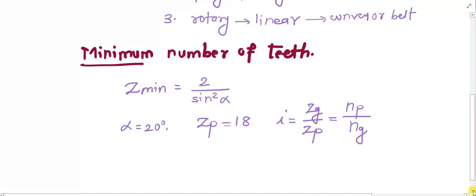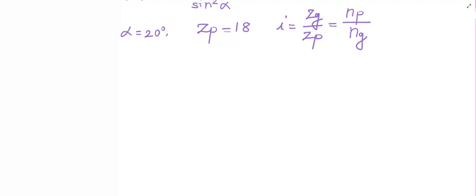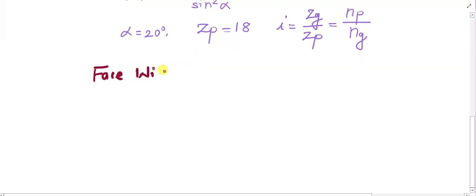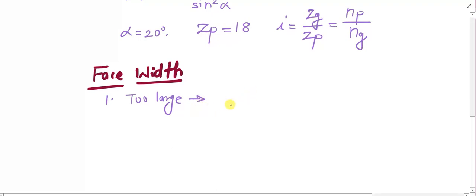The next important concept in gear design is face width. Face width is critical because there are problems at both extremes. If the face width is too large, the load being transmitted by the gear may get concentrated on one end of the gear tooth, resulting in a non-uniform distribution of load. This is a waste of material and causes imbalance in the system.